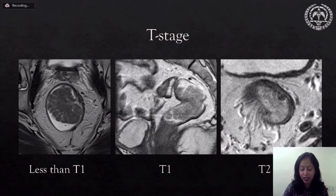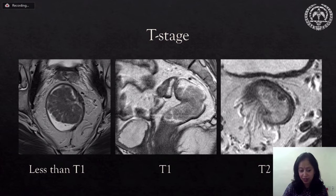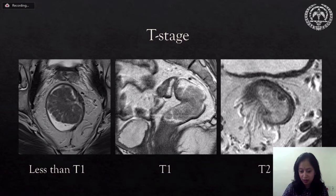The T stage can be very eloquently demonstrated using MRI. We can see a less-than-T1 stage tubulovillous adenoma with a short pedicle where the base is not infiltrated by tumor signal and there is an intact muscularis propria. In a T1 stage there is puckering of the rectal wall but an intact muscularis propria. In a T2 stage there is at least partial thickness muscularis infiltration. Desmoplastic reaction should not be mistaken for a T3 stage.